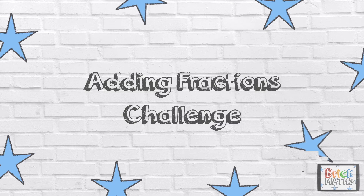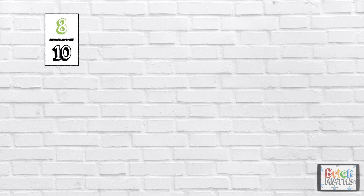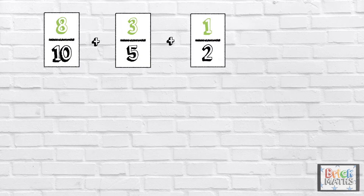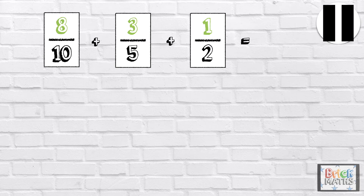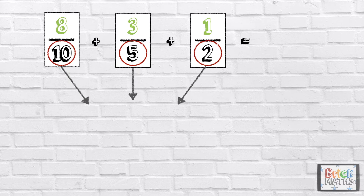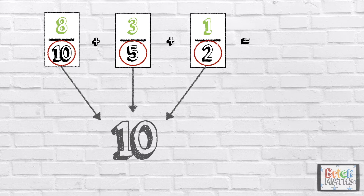Fractions challenge 1. Here is a calculation: 8 tenths add 3 fifths add 1 half. Pause the video to give you time to work out the answer. Press play when you're done. How did you get on? First, we need to find a common denominator. 10 is the common denominator because it can be divided by 10, 5, and 2.